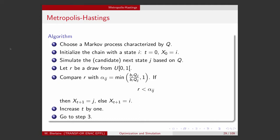So this is the algorithm. We take a Markov process characterized by q. We initialize the chain with a state i, so x0 is equal to i. We generate a candidate using q, and we denote it by j. Then we decide, using a draw from 0 to 1, if we keep the candidate or not by comparing it with alpha i,j, which is defined as we have seen before. If we decide to keep it, j becomes the next state. If not, i is the next state — we stay at the same state. Then we increase t by 1 and start again.